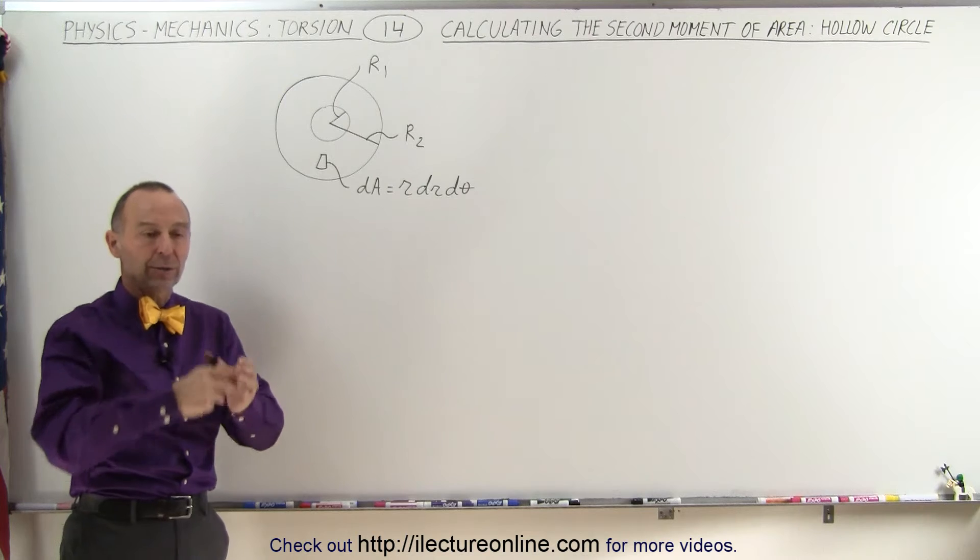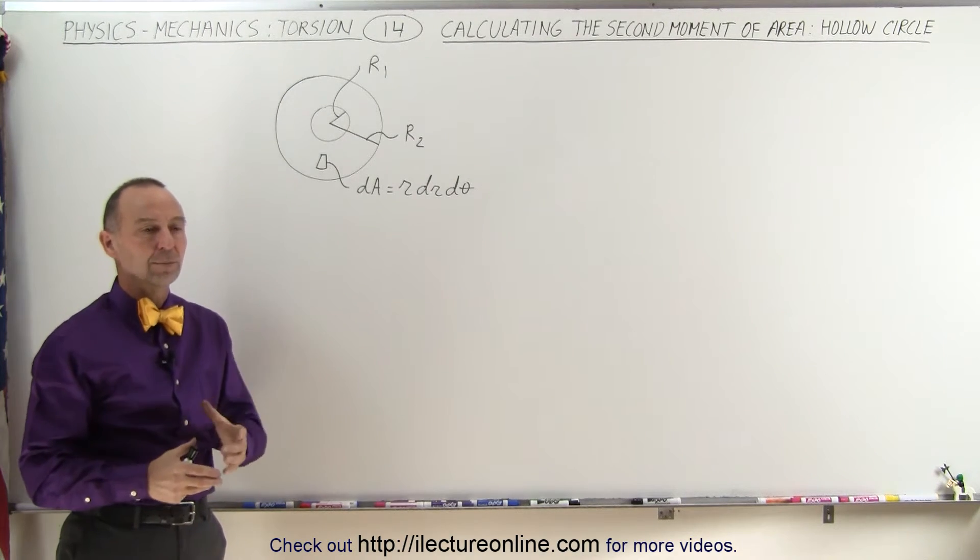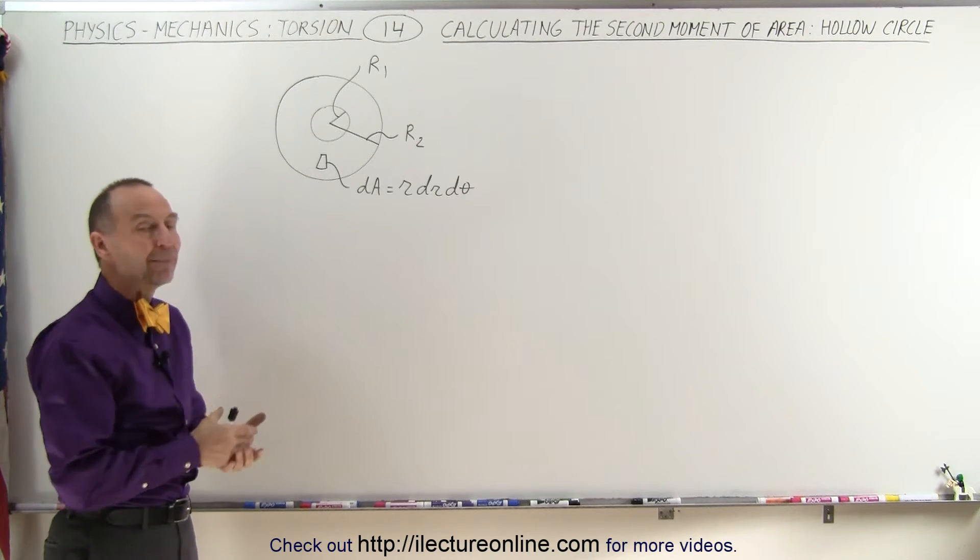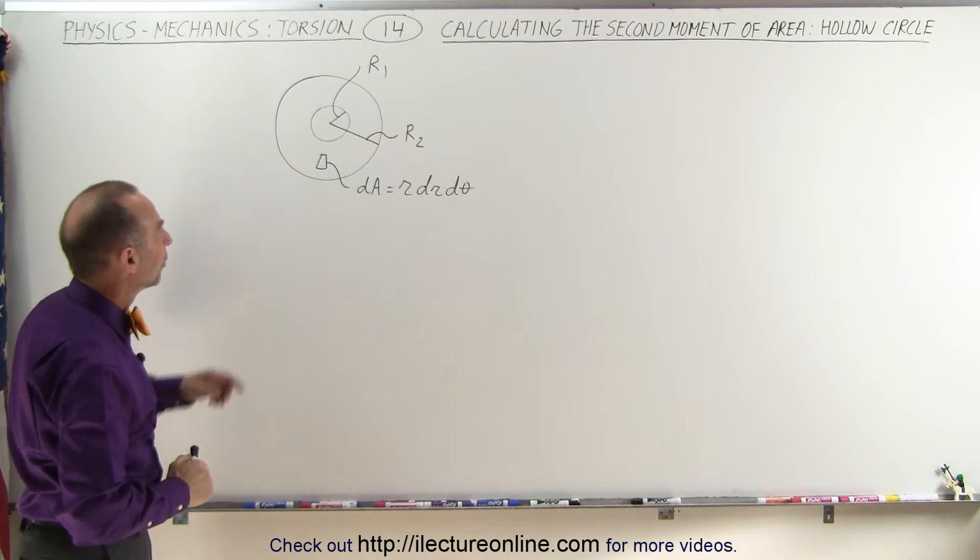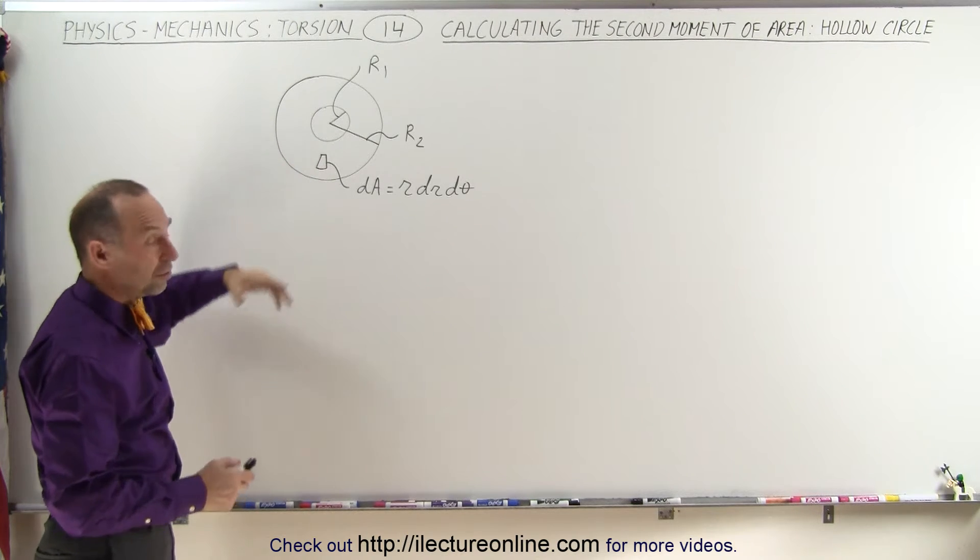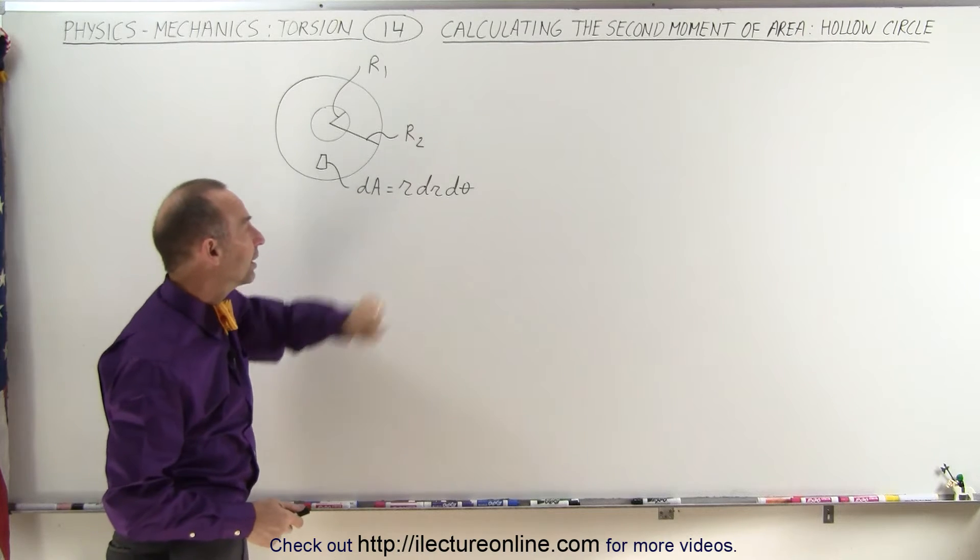So it would be a wire with a hollow core or a post or a cylindrical object that gets twisted that has an empty region that is circular on the inside. So you can see we have an inner radius R1 and an outer radius R2 and the area elements, since it's a circle, we still can use dA is equal to R dr d theta.